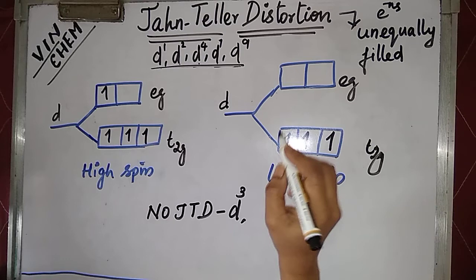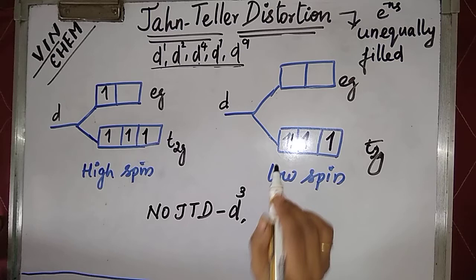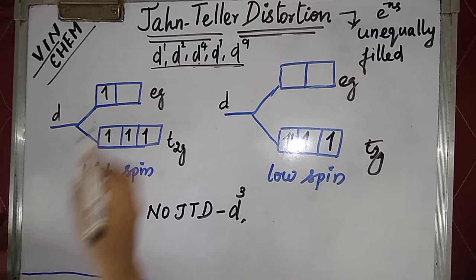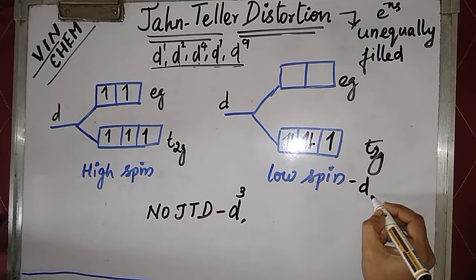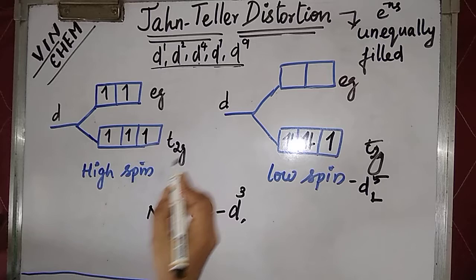For d4 low spin, pairing takes place in the triply degenerate orbital itself, so Jahn-Teller distortion is also present here with unequally filled electrons. For d5, there is no distortion — equally filled. But for d5 low spin, Jahn-Teller distortion is there.